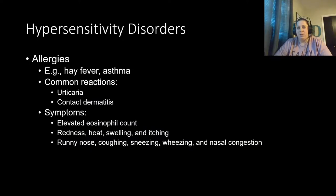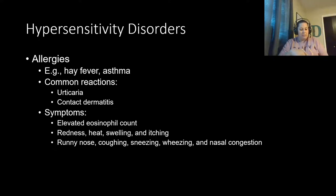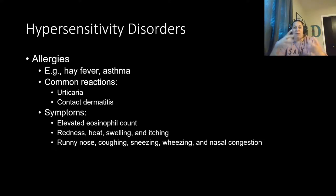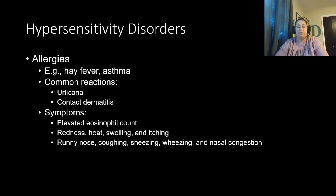We're going to look at hypersensitivity disorders first — where the immune system overreacts to what it's been exposed to. For each condition we'll look at description, etiology, symptoms, diagnosis, treatment, and prevention. Allergies are the most prevalent type of hypersensitivity. Examples include hay fever and asthma. Common reactions include urticaria (hives) and contact dermatitis. Symptoms include elevated eosinophil count, inflammation (redness, heat, swelling, itching), runny nose, coughing, sneezing, wheezing, and nasal congestion, as the respiratory system normally becomes involved.